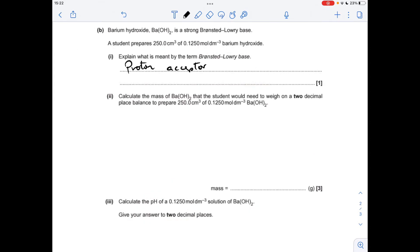Part B switches to Bronsted-Lowry bases. The definition of a Bronsted-Lowry base is a proton acceptor. The calculation for the mass of barium hydroxide - I've written up the calculation to get the moles of barium hydroxide that would be in that solution: concentration times volume. Remember that volume's got to be in decimeters cubed. We work out the Mr of barium hydroxide, multiply by the moles to get the mass in grams. That's coming out at 5.35 grams.